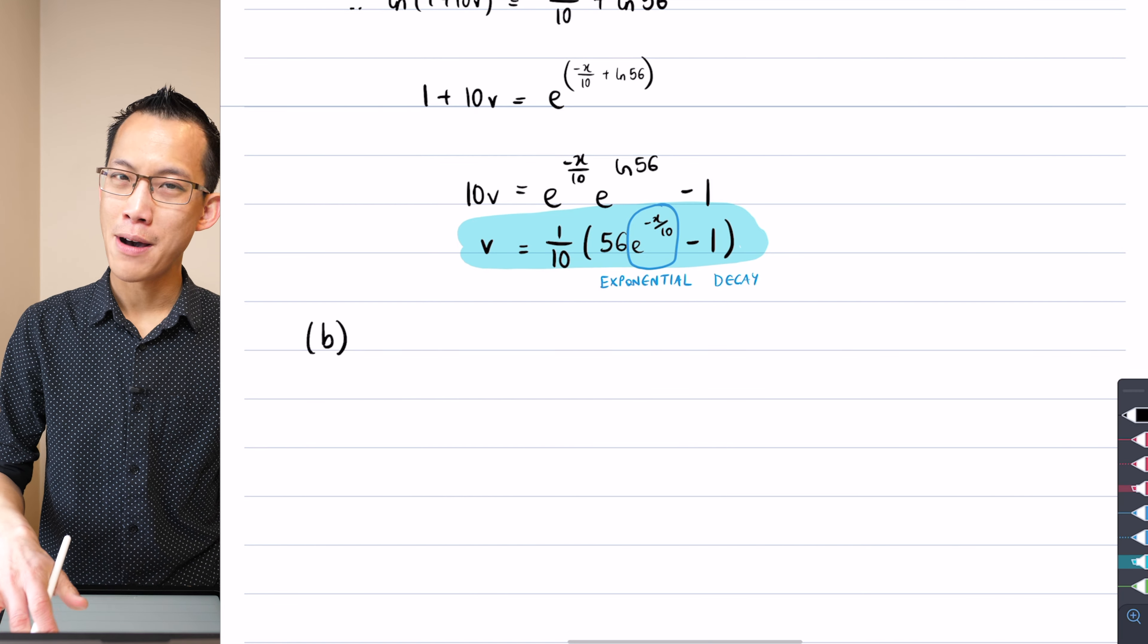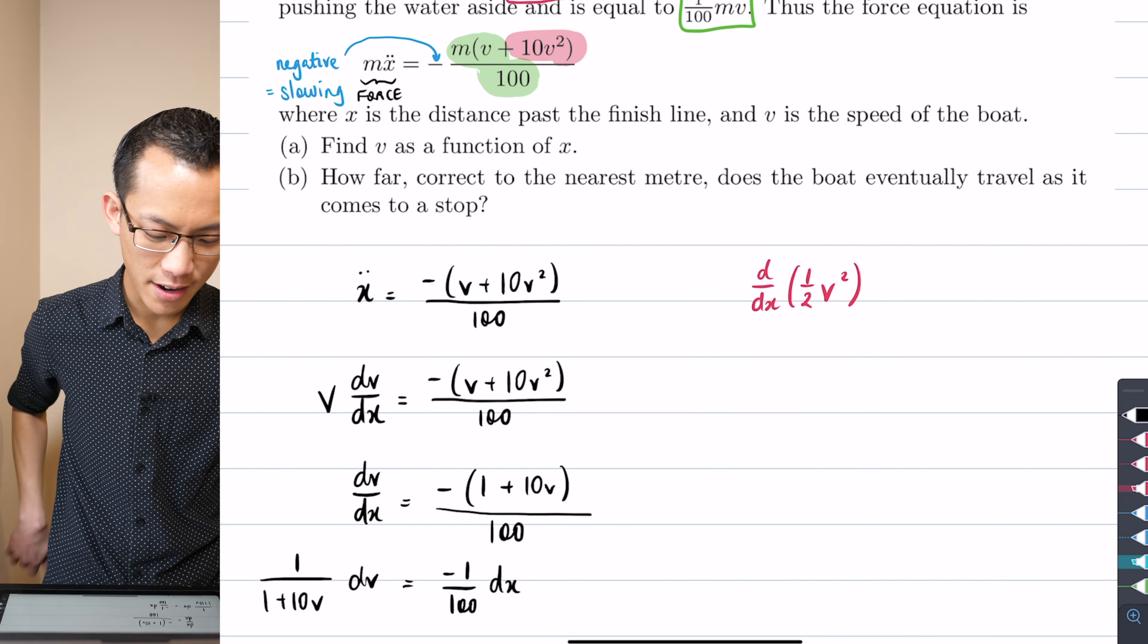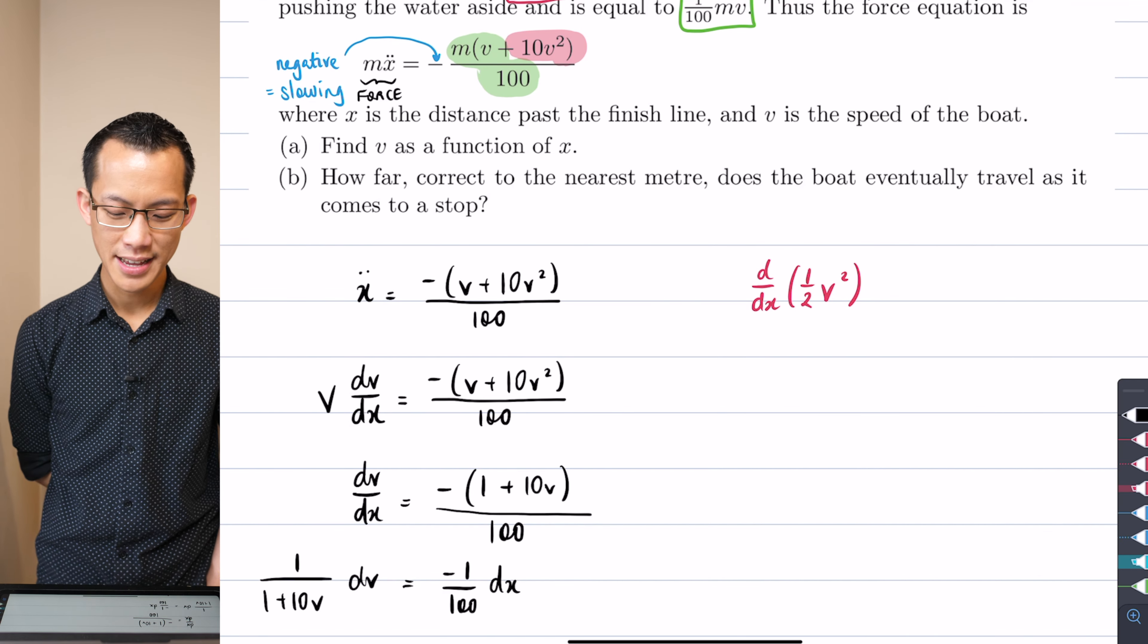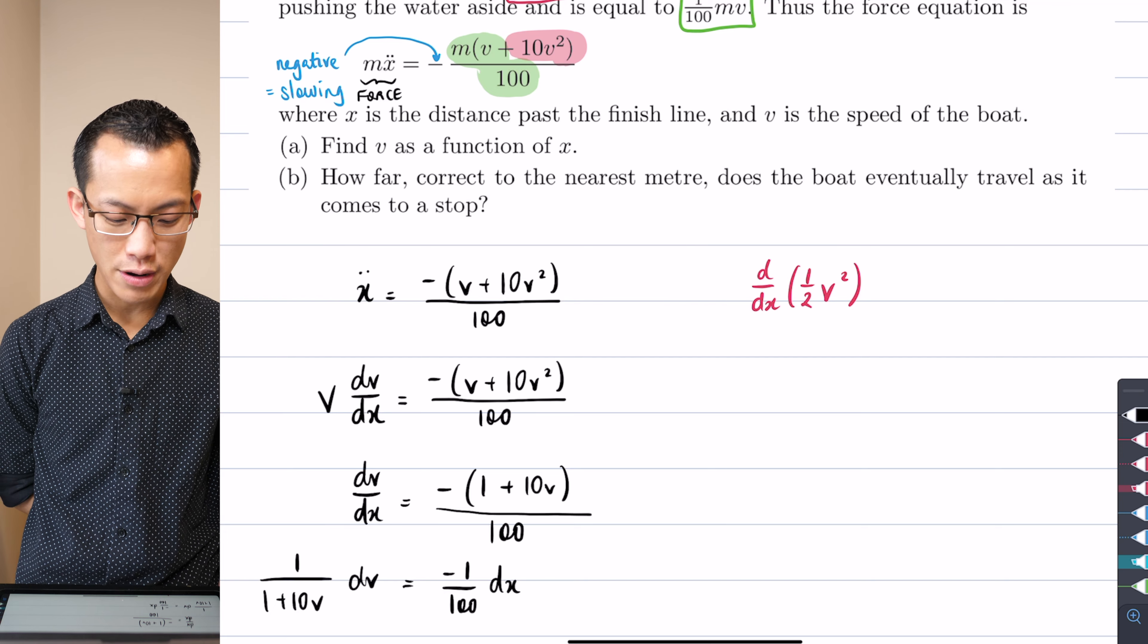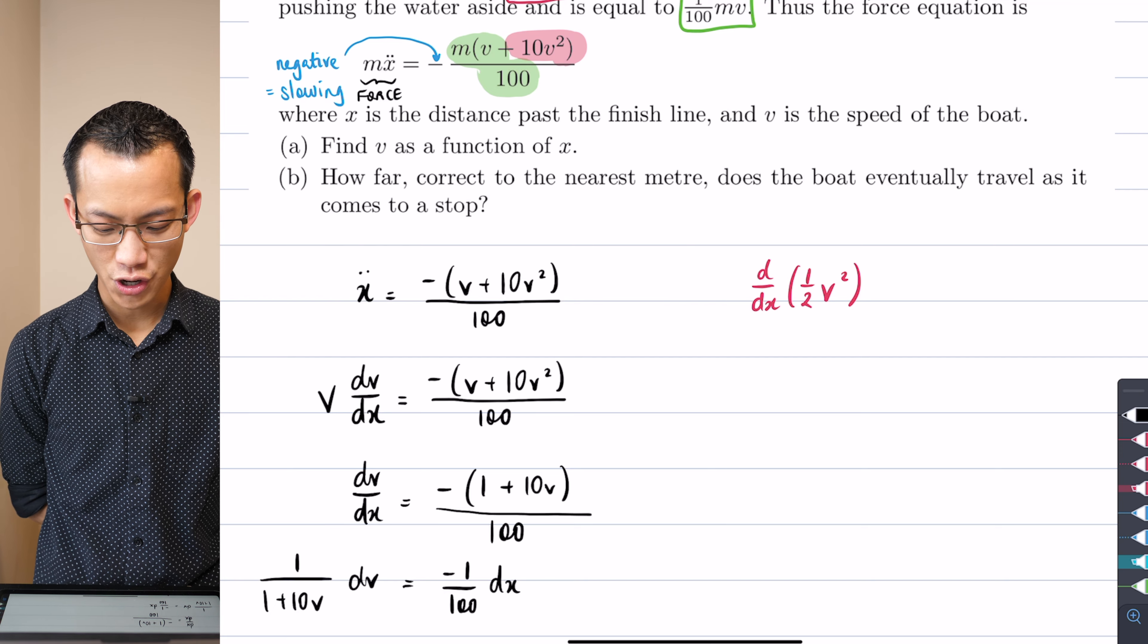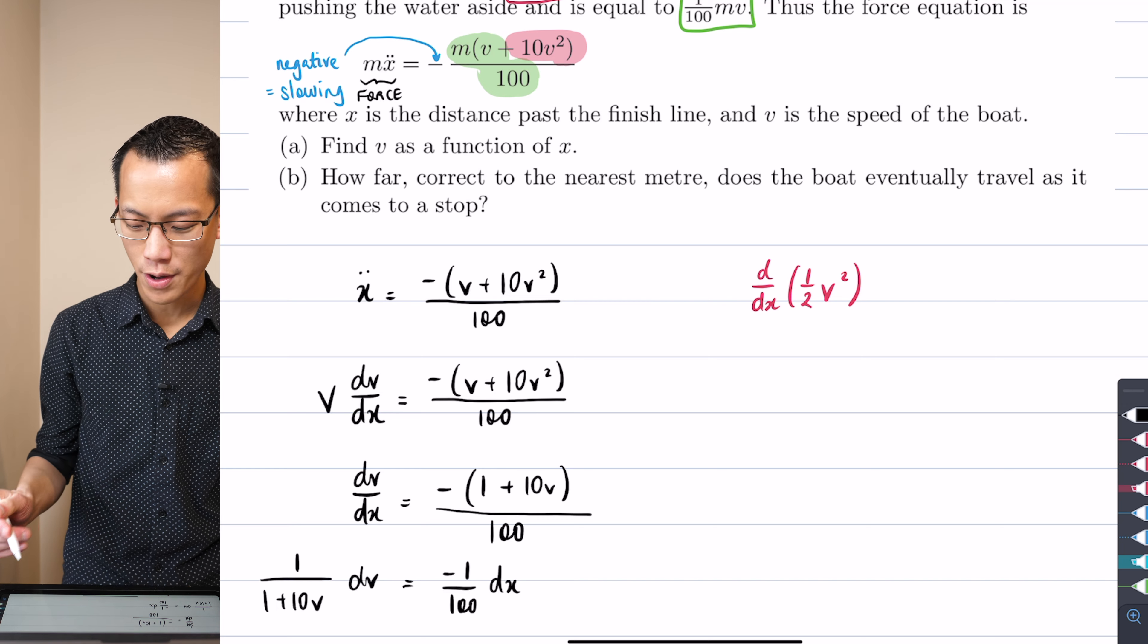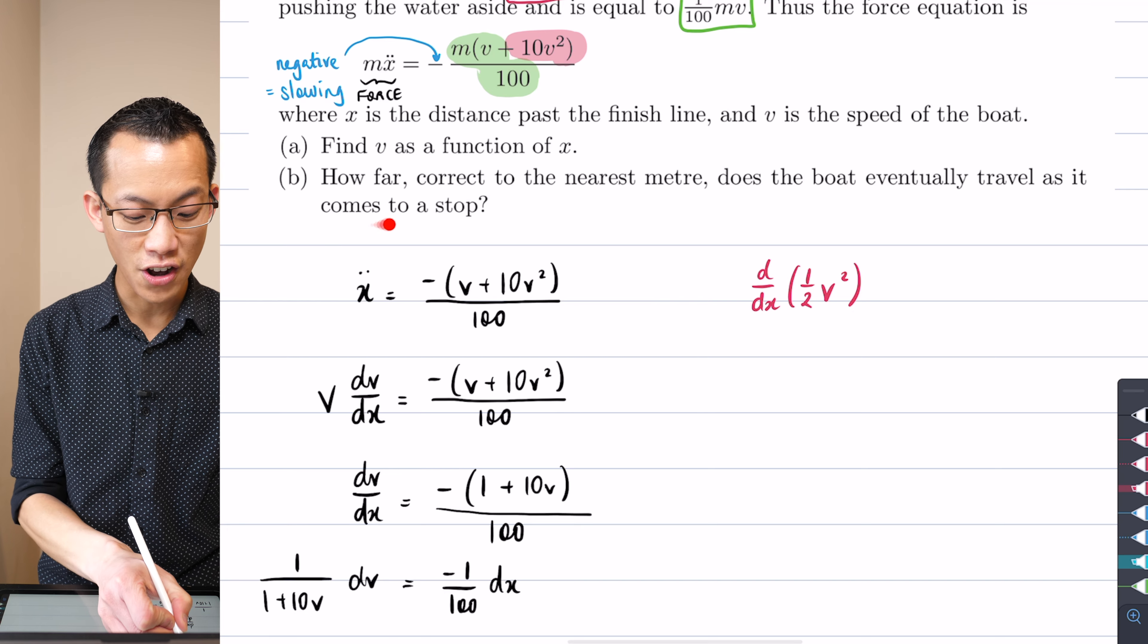All right, so there's part A, part B. Let's go back to the question and see what it's asking us. It says, how far, correct to the nearest meter, does the boat eventually travel as it comes to a stop? How far does it go eventually as it comes to a stop? Now, it's probably worth mentioning that this phrase, comes to a stop, is what happens in reality.